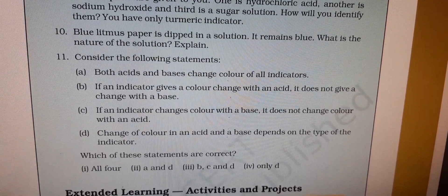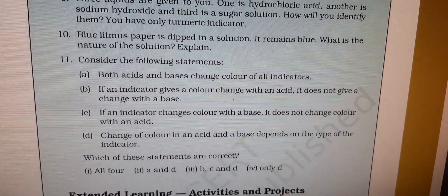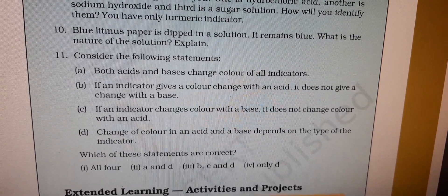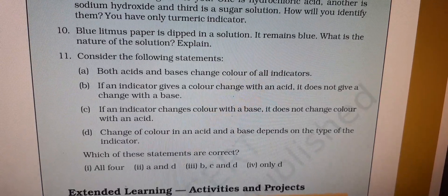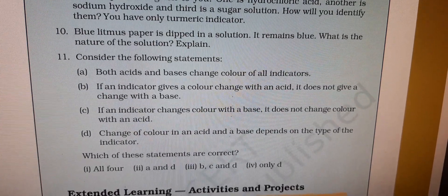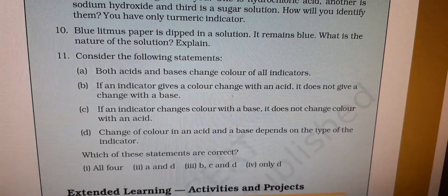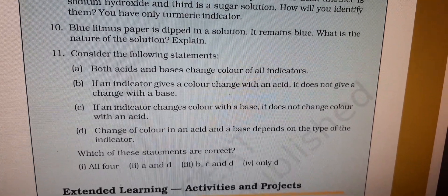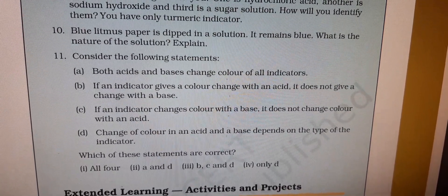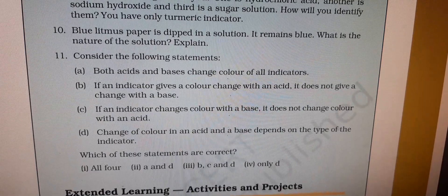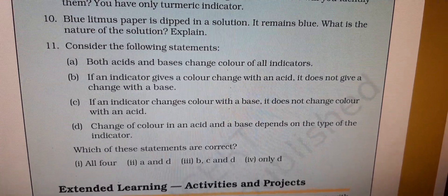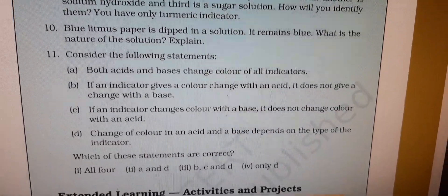Question 11 is a MCQ — do it in the book itself. Statement A: Both acids and bases change color of all indicators — False. Statement B: If an indicator gives a color change with an acid, it doesn't give a change with a base — False. Statement C: If an indicator changes color with a base, it doesn't change color with an acid — also False. Statement D: Change of color in an acid and base depends on the type of indicator — True. So the correct answer is only D.